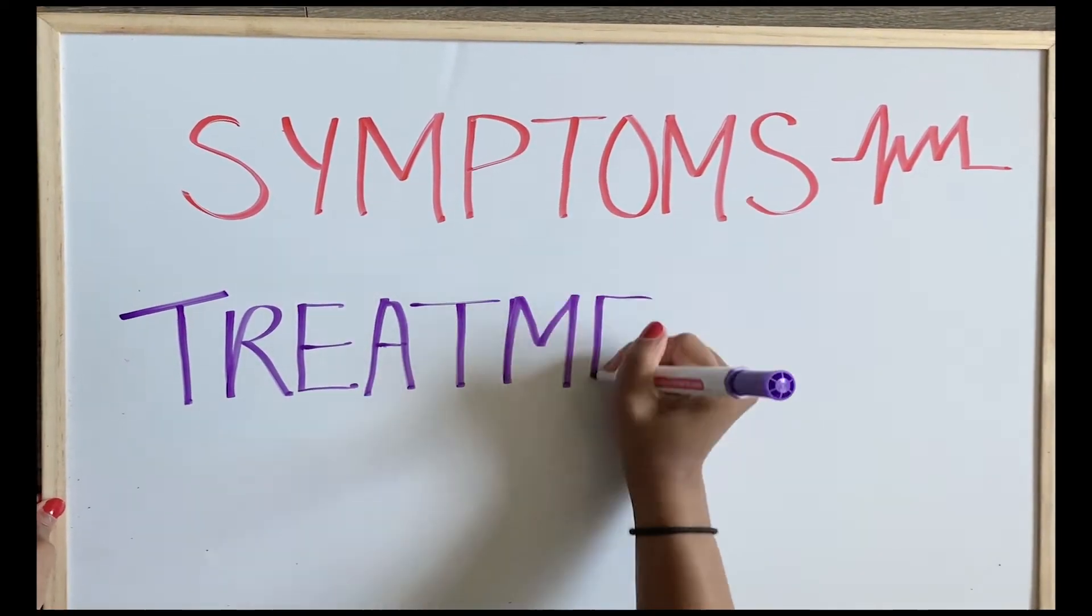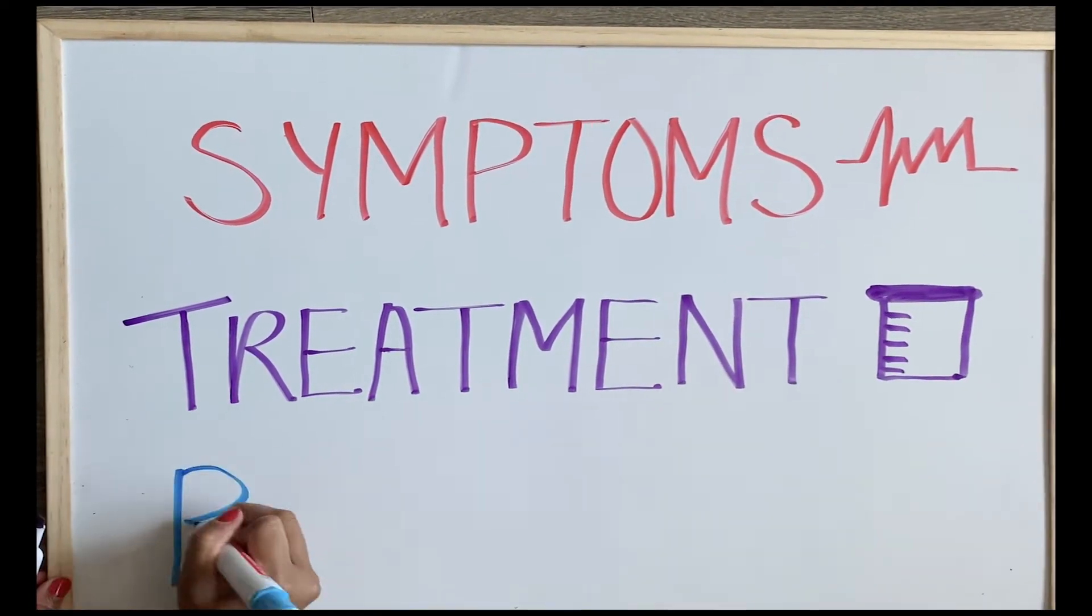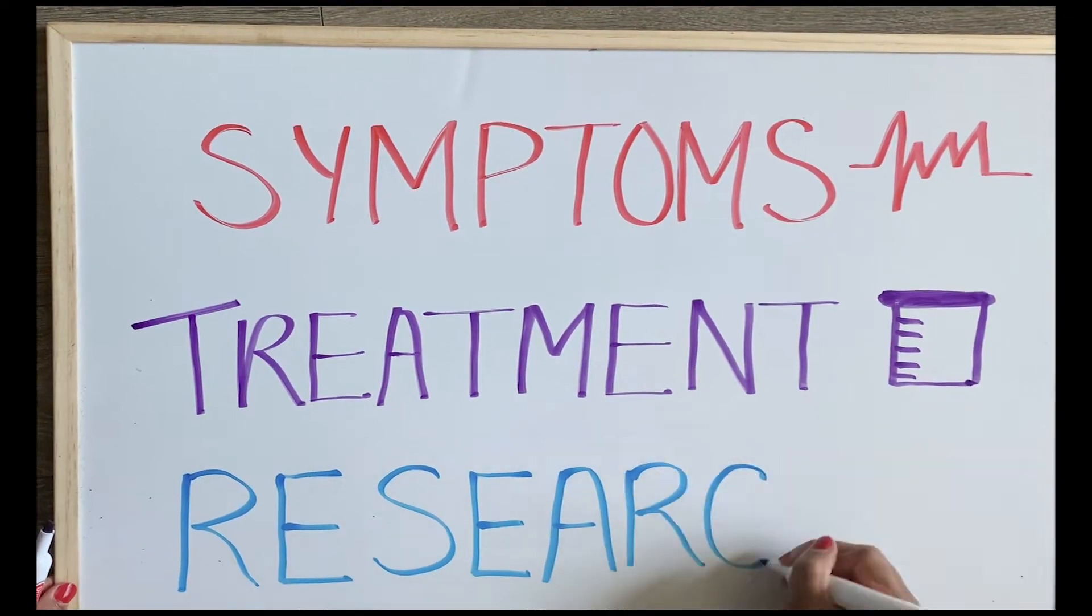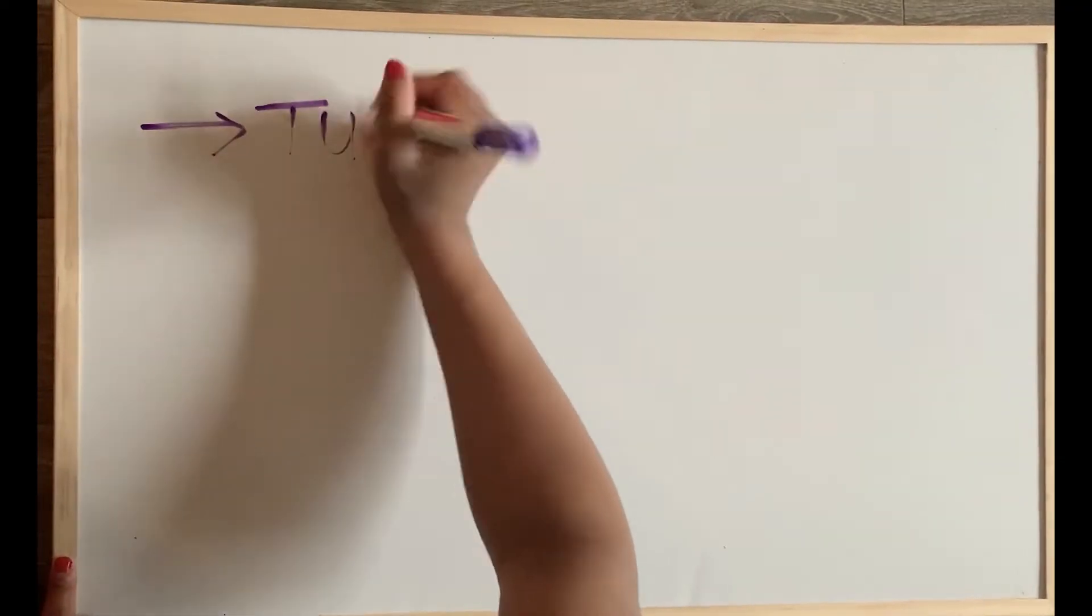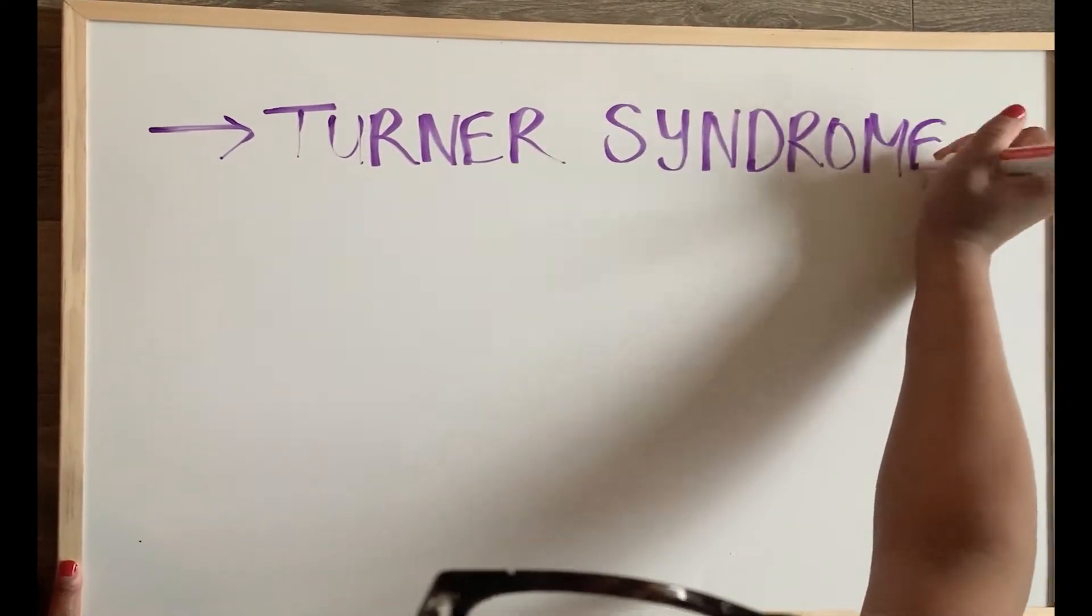We will also be going over some of the symptoms, diagnosis process, treatment options, and research areas. A sex chromosome abnormality is when an individual has an abnormal number of sex chromosomes,